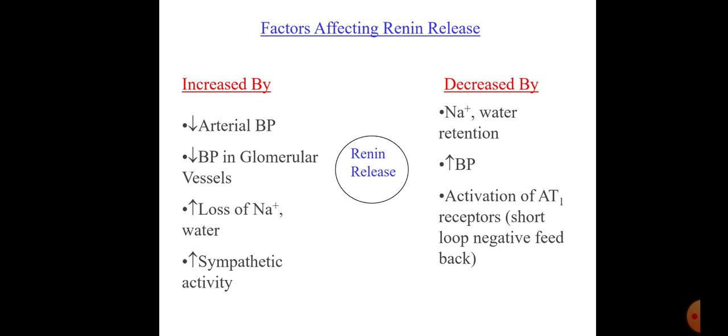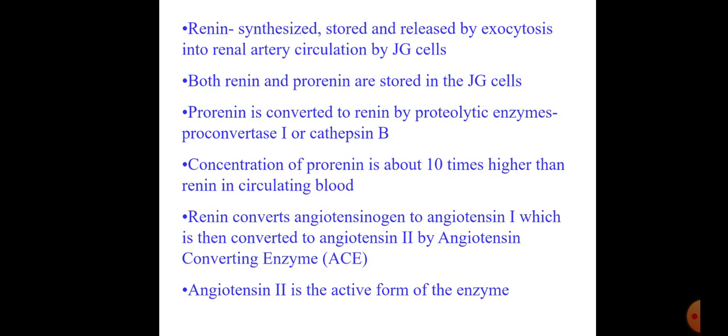Renin increases the synthesis of angiotensin: angiotensinogen is converted to angiotensin 1, then angiotensin 1 is converted to angiotensin 2, which acts on the AT1 receptor. The AT2 receptor also plays some role, but AT1 is the major receptor. This is also a feedback mechanism — renin increases angiotensin 2 levels, but angiotensin 2, by acting on AT1, limits further renin release. Renin is synthesized, stored, and released by exocytosis into renal artery circulation by the juxtaglomerular cell.